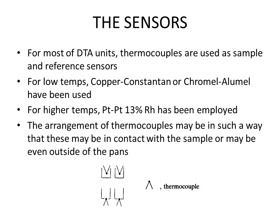For most DTA units, thermocouples are used as temperature sensors for both sample and reference cells. If working at low temperatures, thermocouples may be copper-constantan or chromel-alumel, while for high temperatures, platinum / platinum-13% rhodium can be used. There might be different arrangements for thermocouples — in some arrangements the thermocouples are in contact with the sample, while in others they are outside the pans and not in direct contact with the samples.